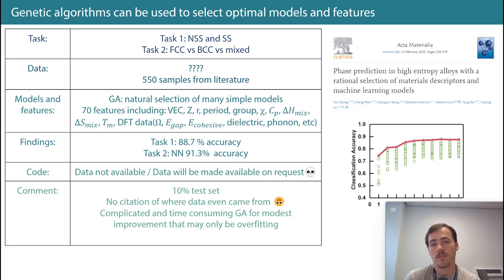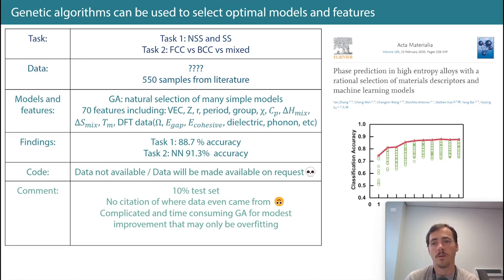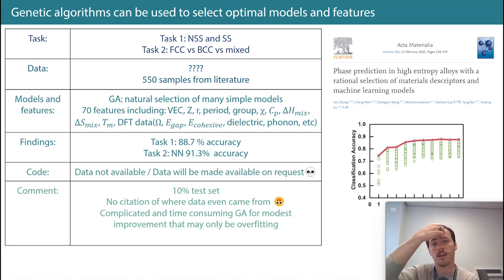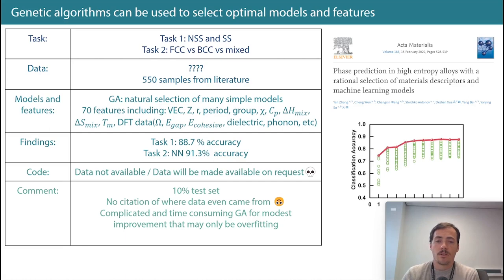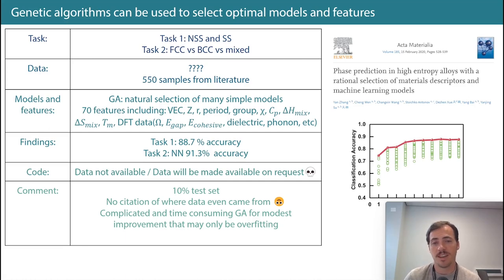Their findings: they claim 88.7% accuracy on the first task and 91% accuracy on the second. My thoughts: not having the data or code means I don't know what to believe. I also wish we'd known where the data actually came from. It is not surprising that a genetic algorithm did well though — genetic algorithms are quite good at finding the best solution, at the expense of computation time.